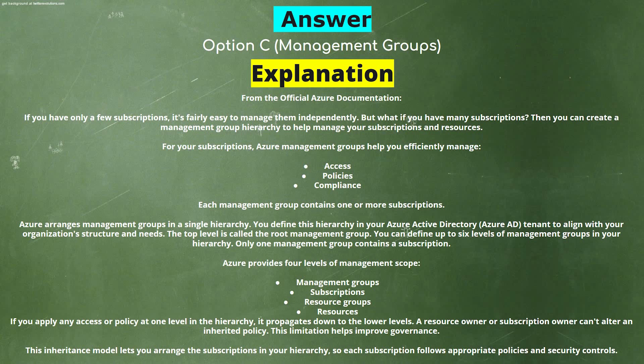Azure provides four levels of management scope: number one, Management Groups; number two, Subscriptions; number three, Resource Groups; number four, Resources. If you apply any access or policy at one level in the hierarchy, it propagates down to the lower levels. A resource owner or subscription owner can't alter an inherited policy — this limitation helps improve governance. This inheritance model lets you arrange the subscriptions in your hierarchy so each subscription follows appropriate policies and security controls.